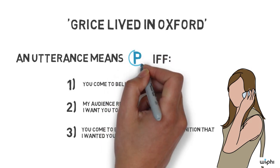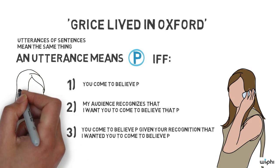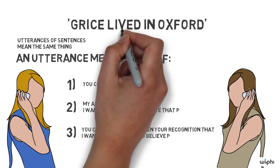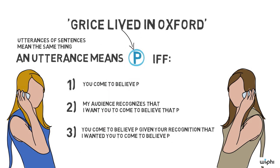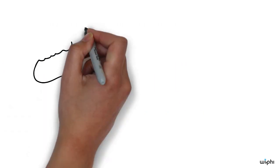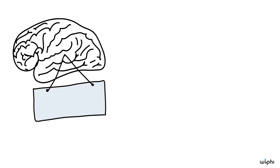So far, this theory tells us what a particular utterance of a sentence means. It tells us what my utterance, the one I made just a minute ago, means based on the intentions I had. Usually, utterances of sentences mean the same thing. If you later today say to a friend, Grice lived in Oxford, it means P. It means the same thing that my utterance, Grice lived in Oxford, meant just a moment ago. So we might want an account that tells us what that sentence itself, eternally, or given every utterance, means.